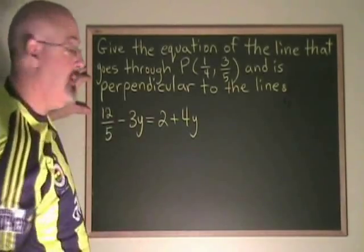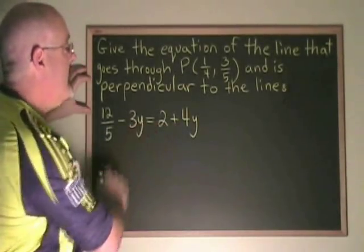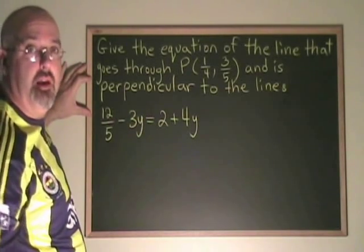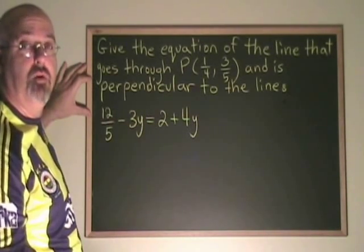The first thing we notice is that this line does not have any x values in the equation. That means it was simplified to y equals number and it is a horizontal line.